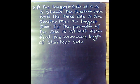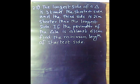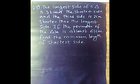The longest side of a triangle is 3 times the shortest side, and the 3rd side is 2 cm shorter than the longer side. If the perimeter of the triangle is at least 61 cm, find the minimum length of the shortest side.